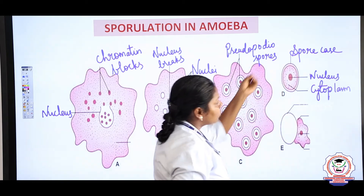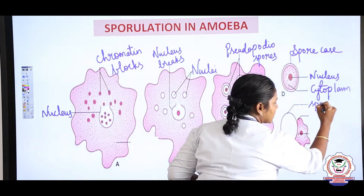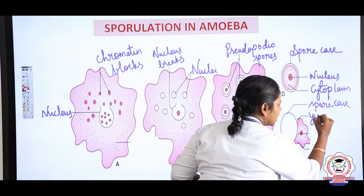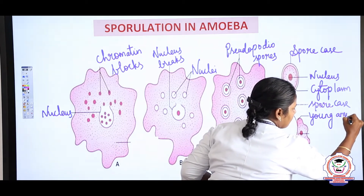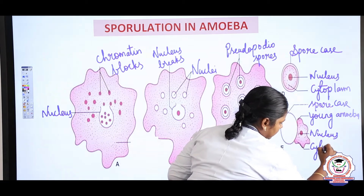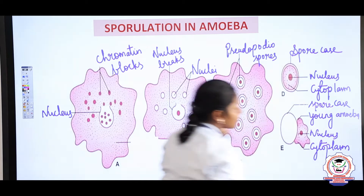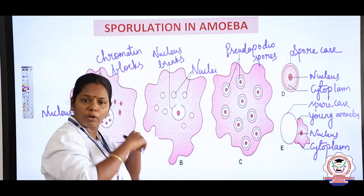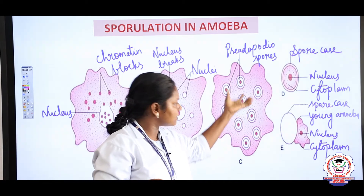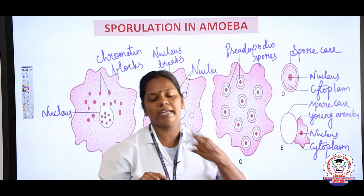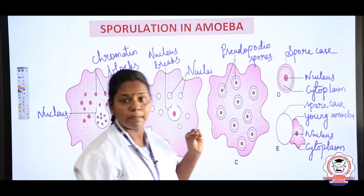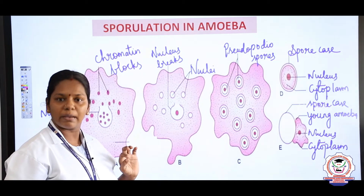The spore case remains attached to the amoeba until it is fully developed. This is the daughter amoeba, with its nucleus and cytoplasm. In summary: the nucleus breaks into chromatin fragments; each nucleus is surrounded by a spore case; when favorable conditions return, the wall breaks and spores are liberated, each emerging as an individual amoeba. The young amoeba are genetically identical to the parent.